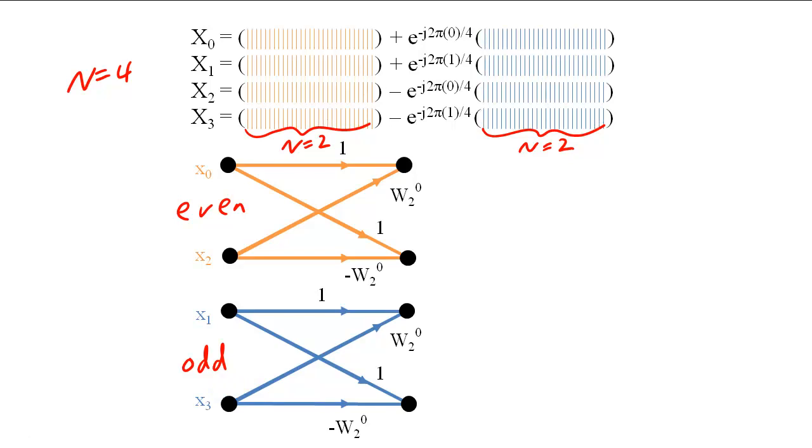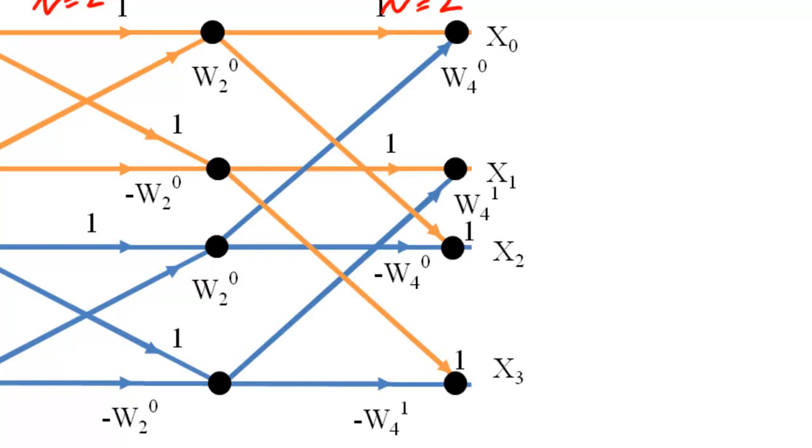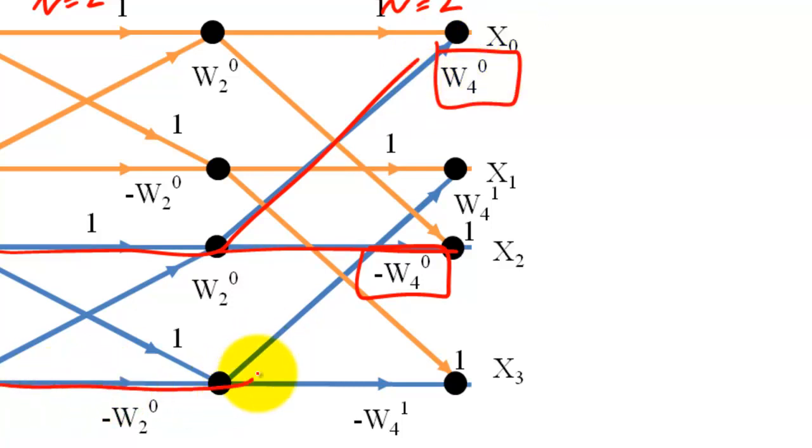We can use the similarity to construct a new butterfly structure that combines the two two-sample DFTs. This butterfly is twice as wide and multiplies the top branch of the bottom butterfly by W sub 4 raised to the 0 and the bottom branch of the bottom butterfly by W sub 4 to the 1.